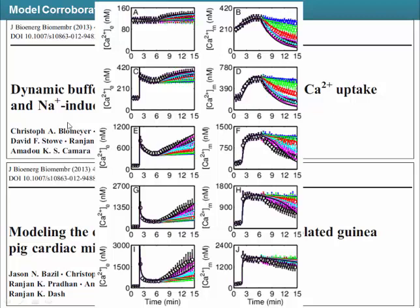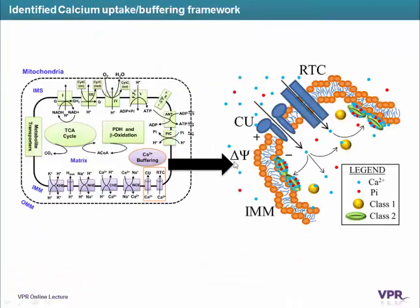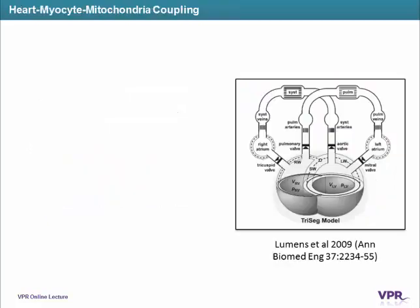We learned that there are two different types of channels in the mitochondria: one is a slow calcium uptake pathway, the calcium uniporter, and the other is a ryanodine-type channel with calcium-graded uptake that is partially inhibited by magnesium. Further analysis of the model suggested that mitochondria are 'smart' — they buffer calcium differently depending on the mode of uptake. This is a hypothesis that needs to be validated by further experiments in the future.